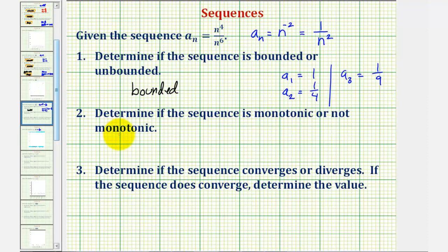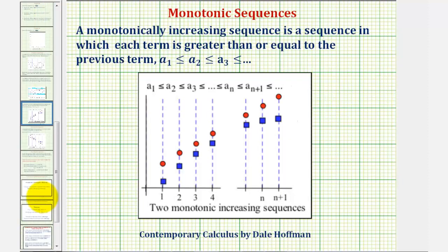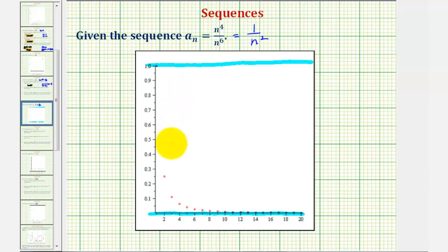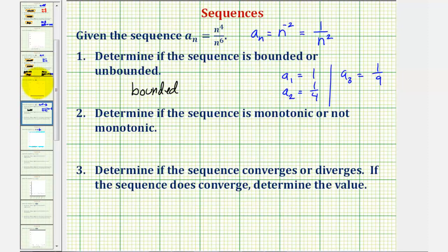For the second question, we want to determine if the sequence is monotonic or not monotonic. A sequence is monotonic if it's always increasing or always decreasing. A monotonically increasing sequence is one in which each term is greater than or equal to the previous term. We can also have a monotonically decreasing sequence in which each term is less than or equal to the previous term, which is what we have. As n increases, the terms get smaller and smaller, and we can see this graphically — each term is less than or equal to the previous term. So we do have a monotonic sequence.